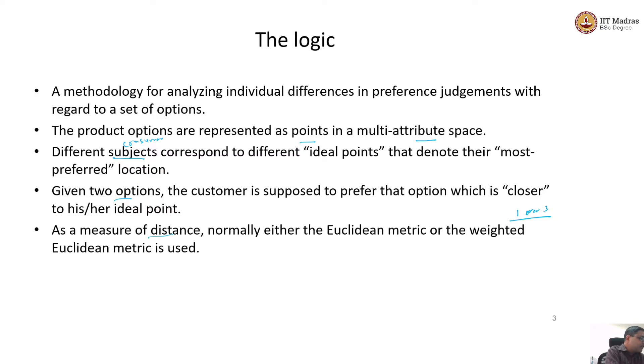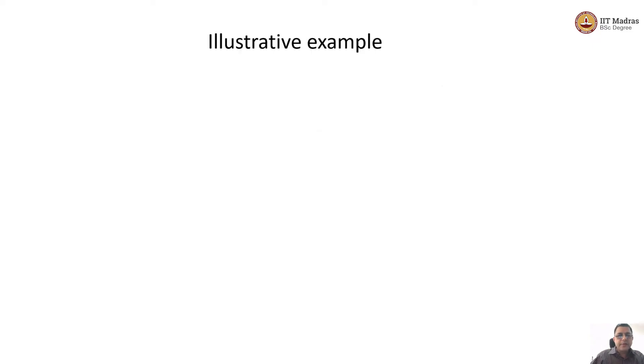As a measure of distance, we are going to either use Euclidean measure or weighted Euclidean measure. We have already decided that if we want to gather the weights assigned to each attributes, we are going to go with weighted Euclidean measure. Let us get into the mathematical notation.